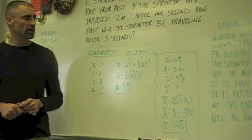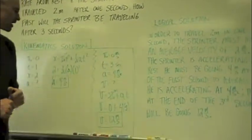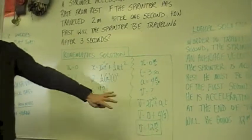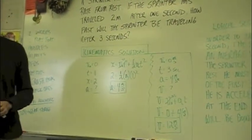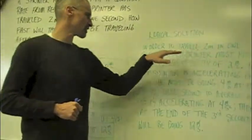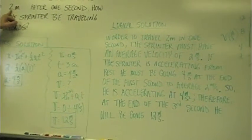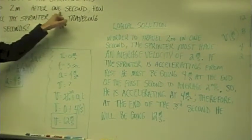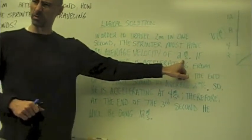Now looking at it from a logical standpoint, which I like because it's tight and tidy: In order to travel two meters in one second, the sprinter has to be going at an average velocity of two meters per second, which makes sense to everybody.